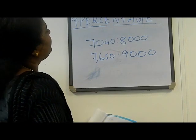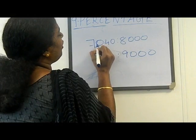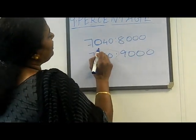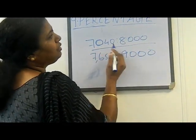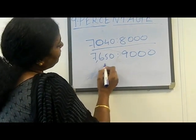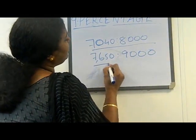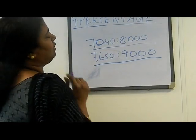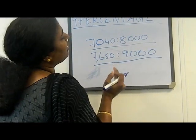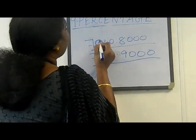We will write down the ratio of Ram's expenditure to his income. His expenditure is 7040 and his total income is 8000, so the ratio of expenditure to income is 7040 to 8000. Kishan's monthly expenditure is 7650 and his income is 9000, so the ratio is 7650 to 9000. We will convert these into percentages so we can compare whose expenditure is more.